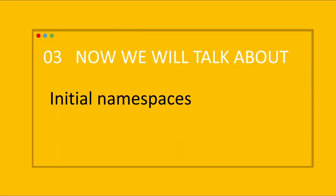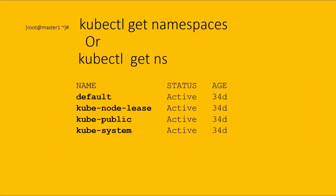The third topic is initial namespaces. If we execute the command 'kubectl get namespace' or 'kubectl get ns' — 'ns' being the short form of namespace — we will observe four namespaces: default, kube-node-lease, kube-public, and kube-system. These are the default namespaces provided by Kubernetes when we create a Kubernetes cluster.